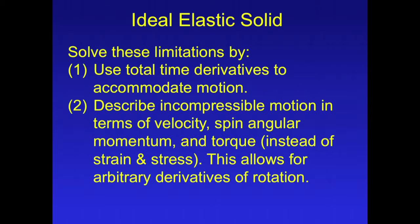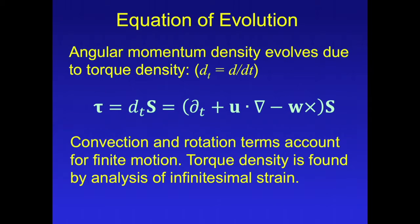We can solve these limitations by, first of all, using total time derivatives to accommodate motion, and secondly, describe incompressible motion in terms of velocity, spin angular momentum, and torque, rather than strain and stress. This allows for arbitrary derivatives of rotation. Angular momentum density evolves due to torque density. And in this equation, the total time derivative includes terms for convection and rotation of the medium.